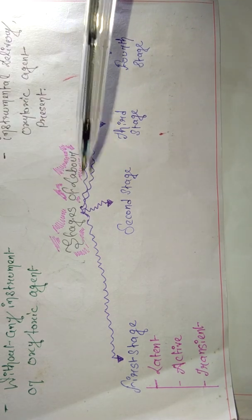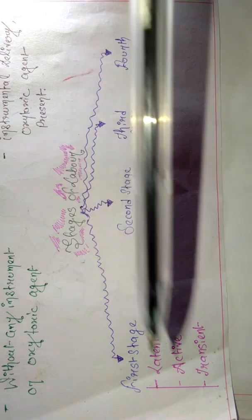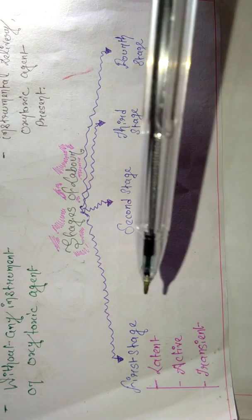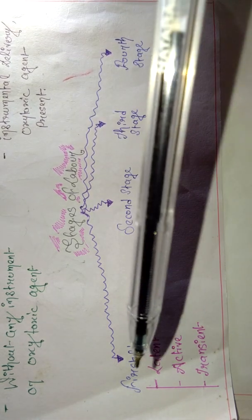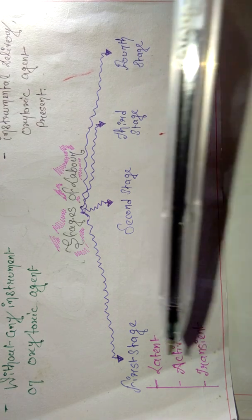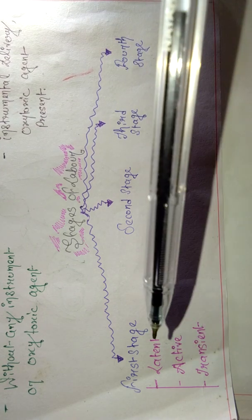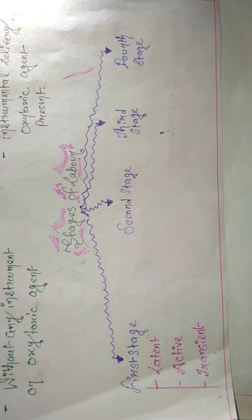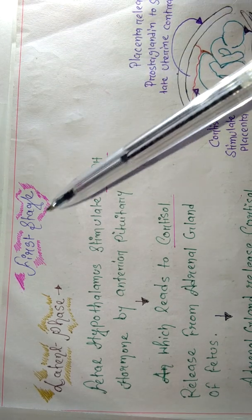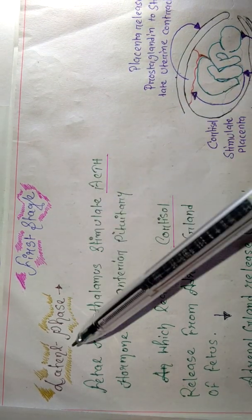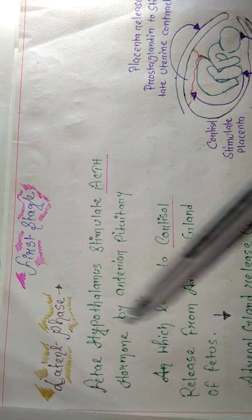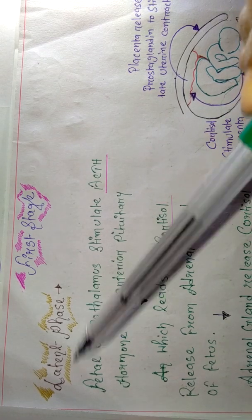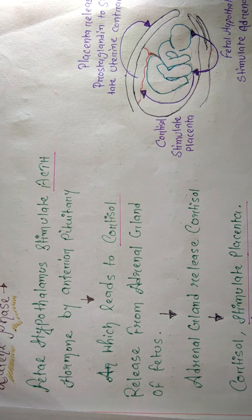Now let's understand the stages of labor. There are four stages: first stage, second stage, third stage, and fourth stage. The first stage is further divided into three phases: latent, active, and transient. Let's start with the first stage and explain each phase in detail.